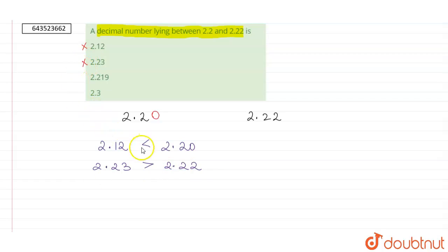Our next number is 2.219. This number has three digits after the decimal, so I will put a zero here and a zero here also to make them like decimal numbers.